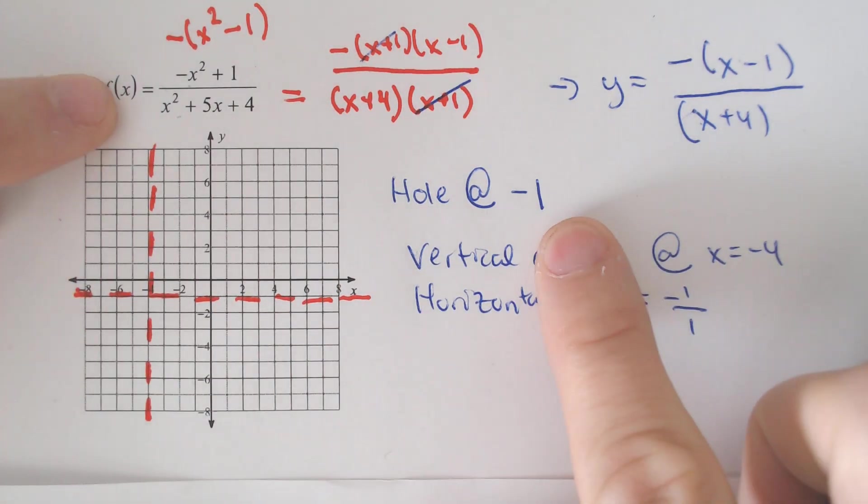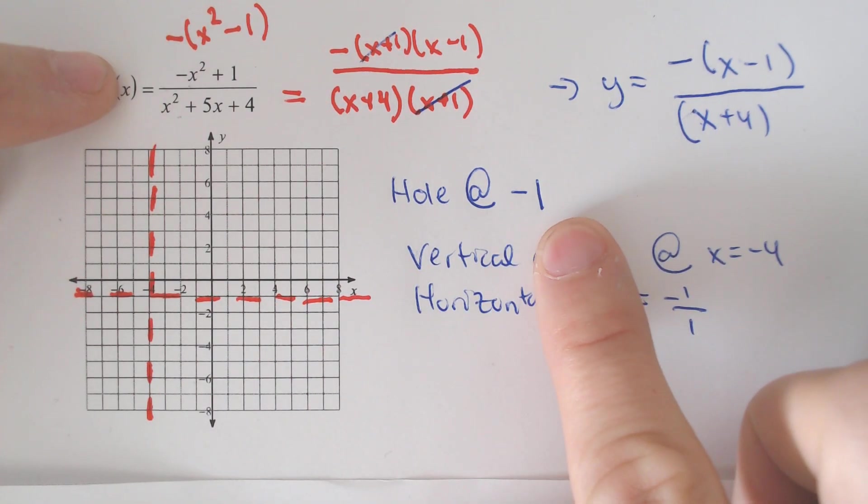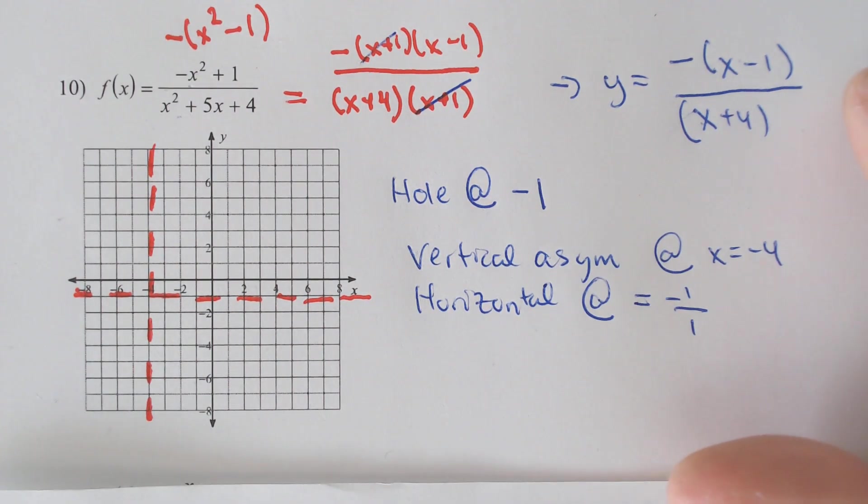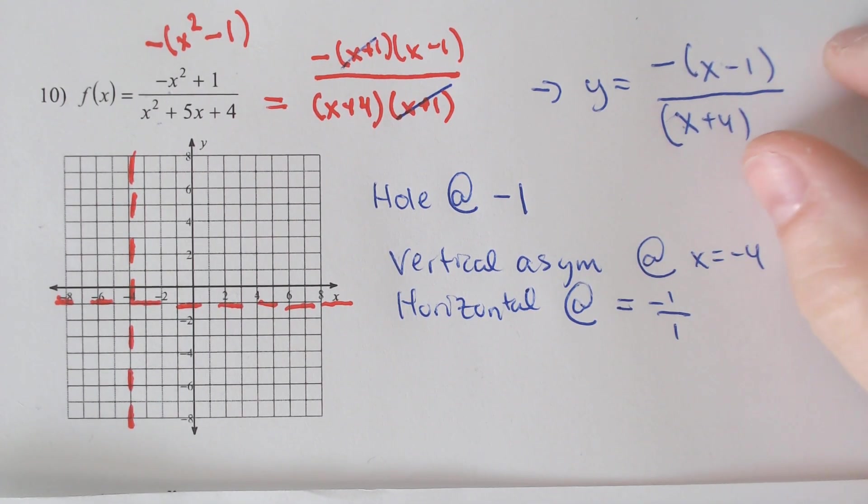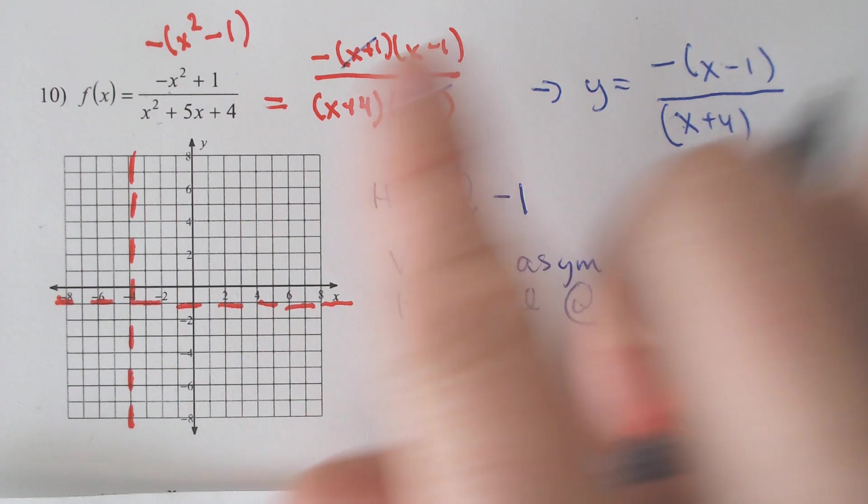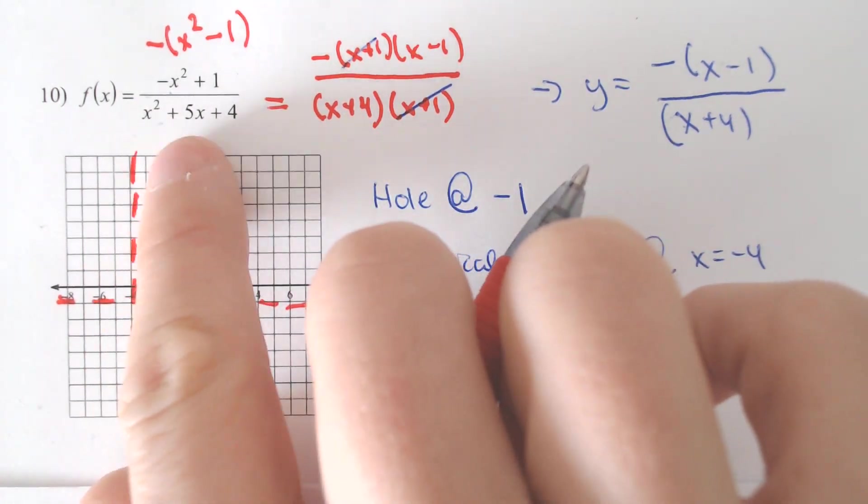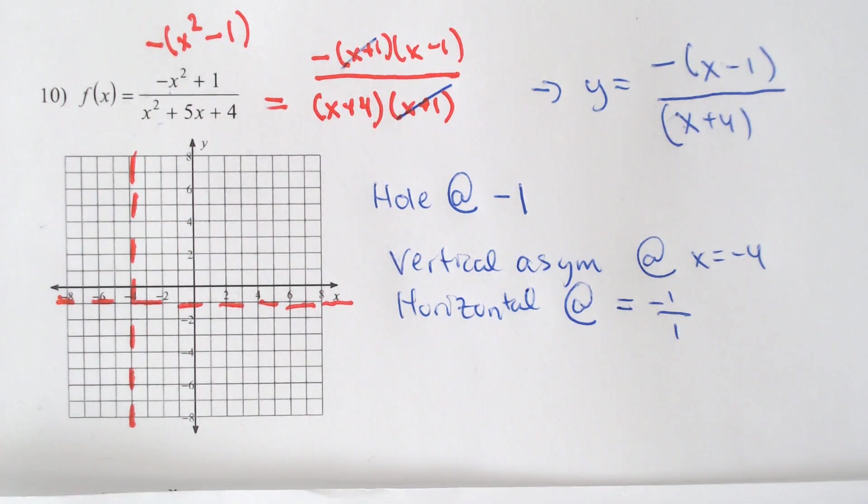Now the key is that if you plugged it into the original function you would be dividing by 0. But if you plug it into the new simplified function, you can actually plug it in, but we have to understand that in the original if you plug in negative 1 it would be dividing by 0 and it wouldn't exist.